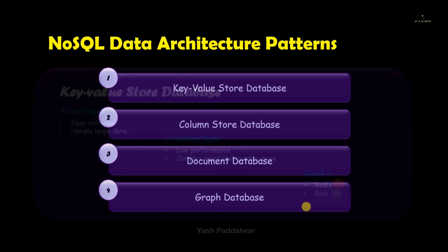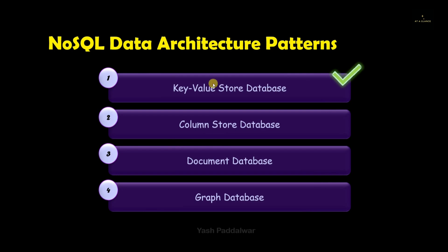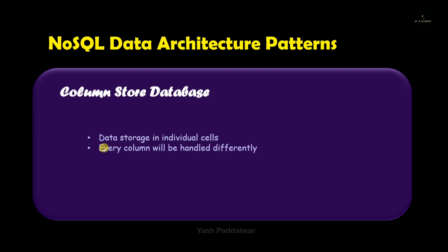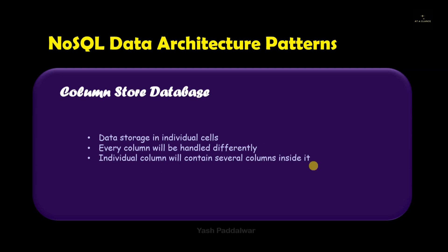Now let's move on to another type of data architecture pattern of NoSQL, which is the column store database. In the column store database, the data storage is done in individual cells. You can relate this with your RDBMS. Every column will be handled differently because all the columns coming under a particular column are functioning separately. Note that an individual column will contain several columns inside it.